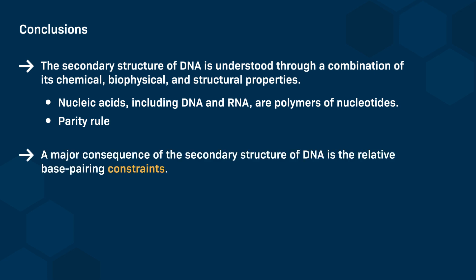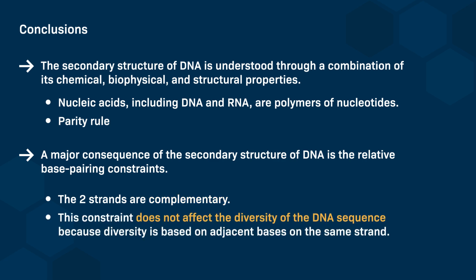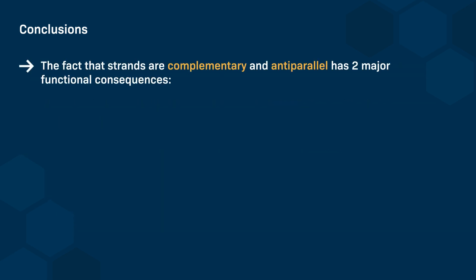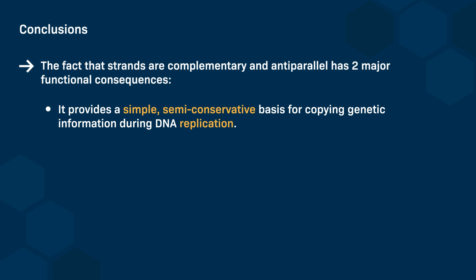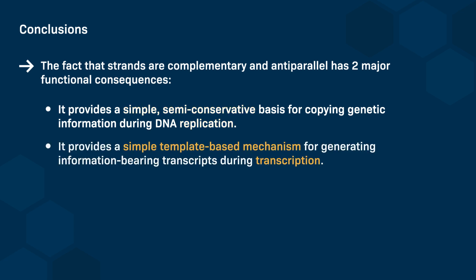A major consequence of the secondary structure of DNA is the relative base pairing constraints. The two strands are complementary, and this constraint does not affect the diversity of the DNA sequence because diversity is based on adjacent bases on the same strand. The fact that strands are complementary and anti-parallel has two major functional consequences. It provides a simple, semi-conservative basis for copying genetic information during DNA replication, and it enables a simple template-based mechanism for generating information-bearing transcripts during transcription.